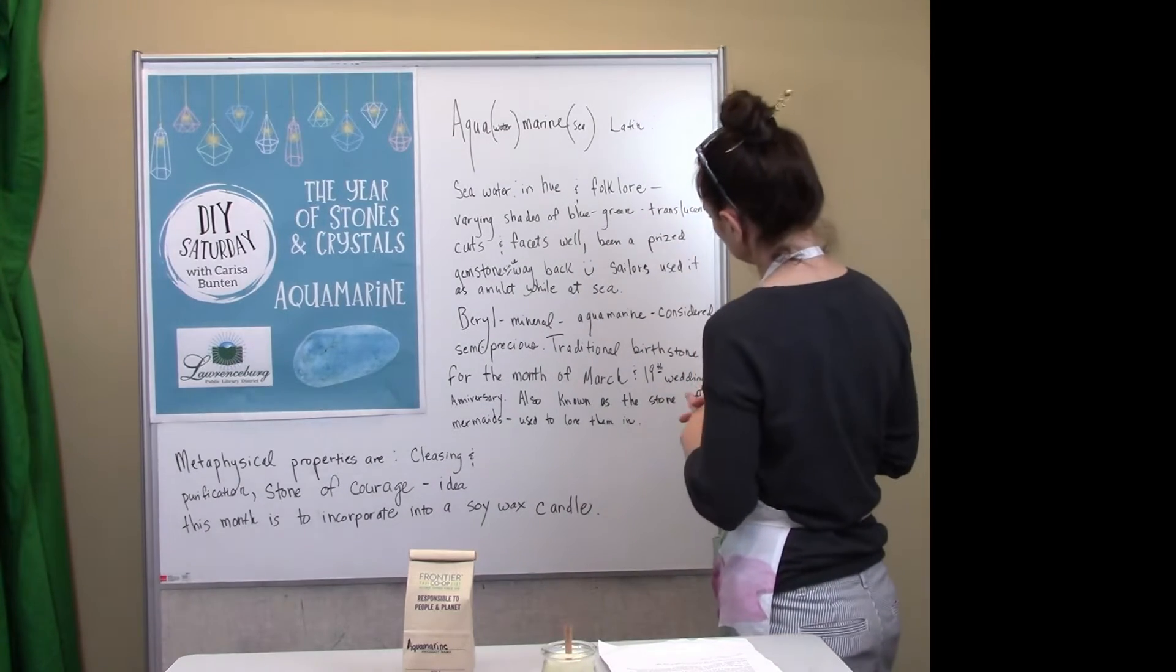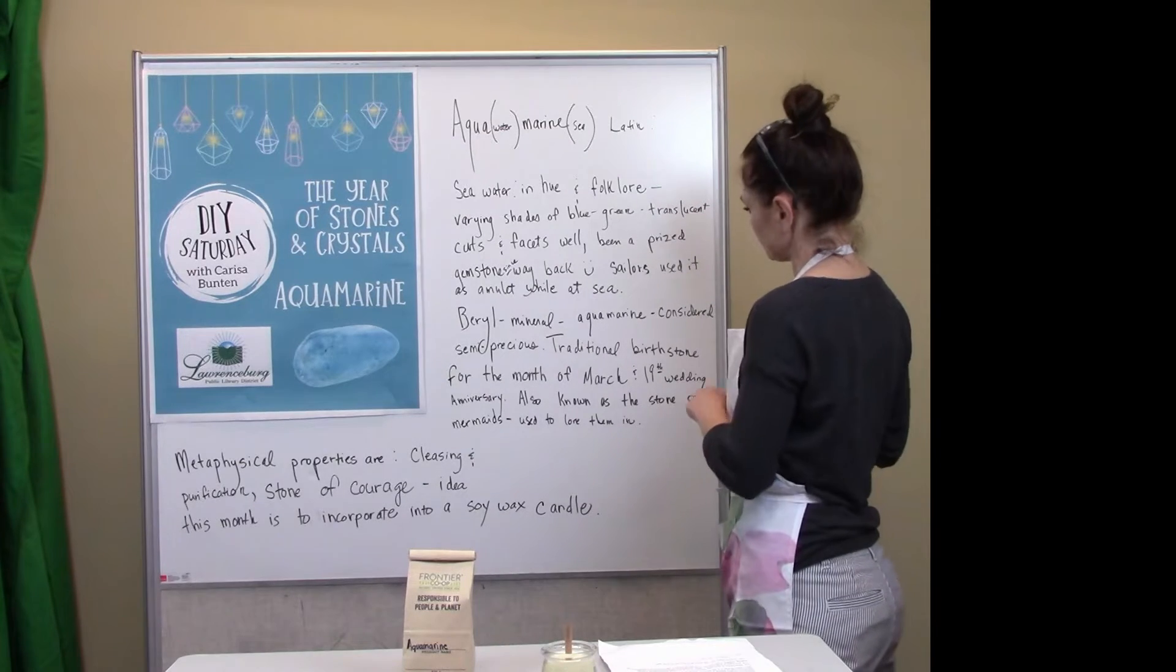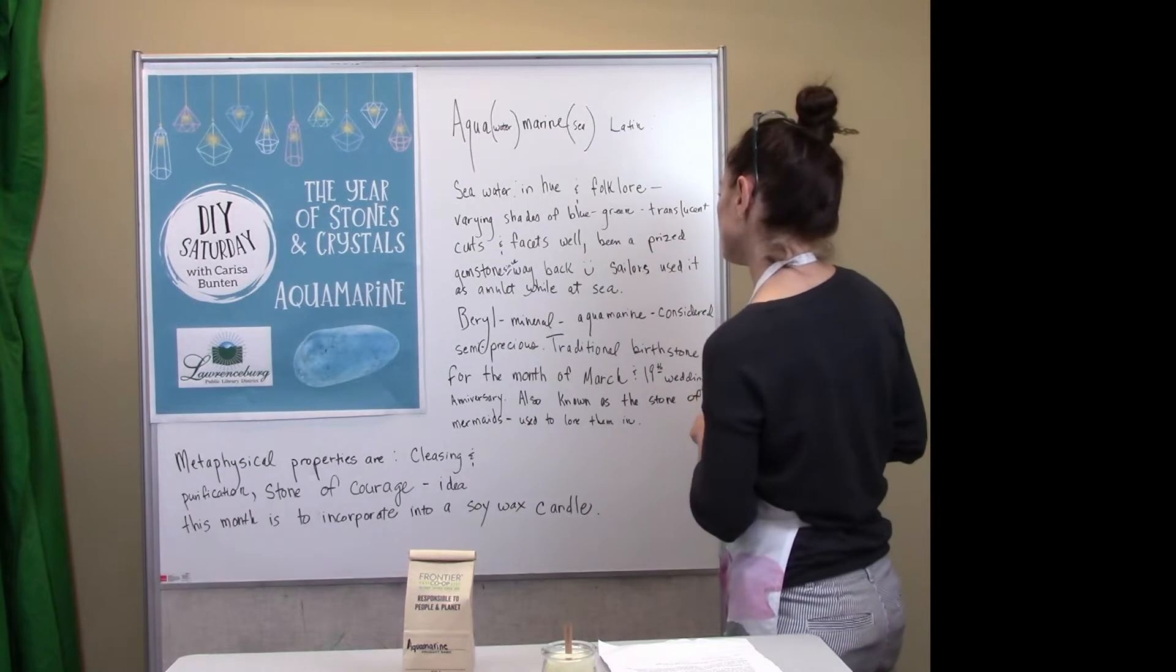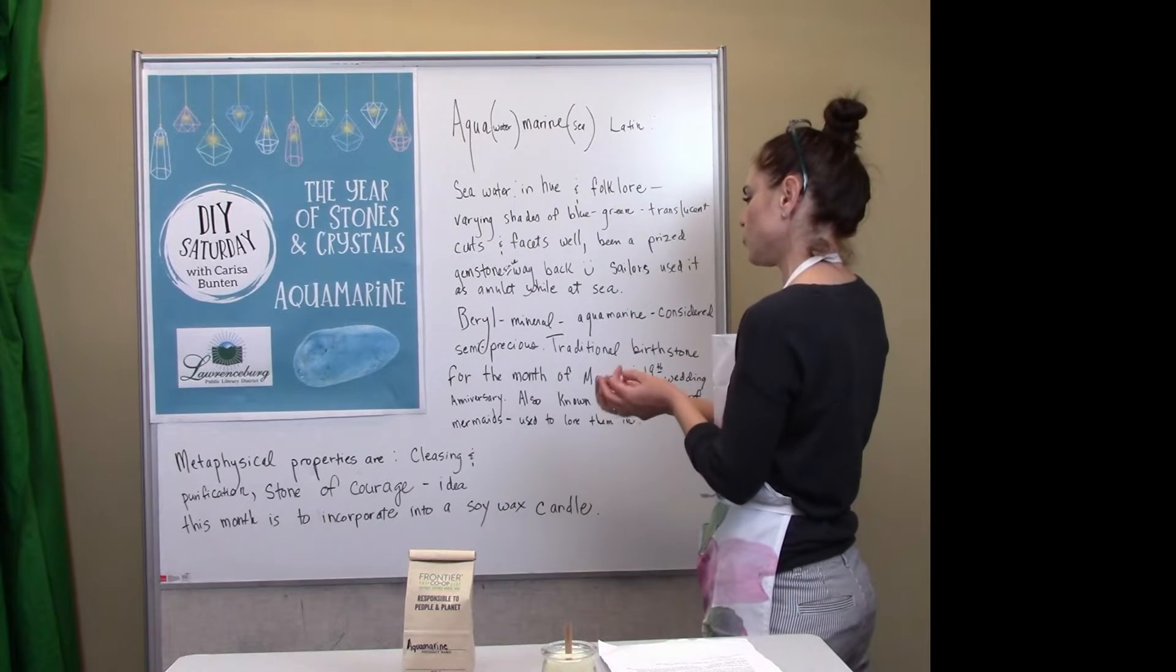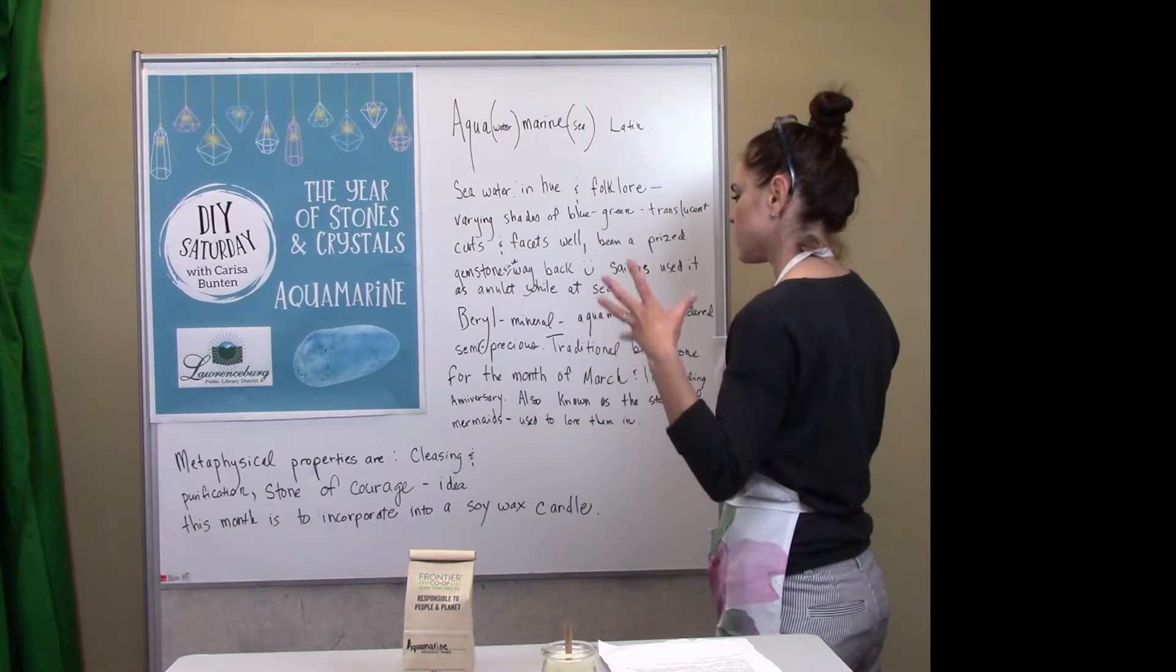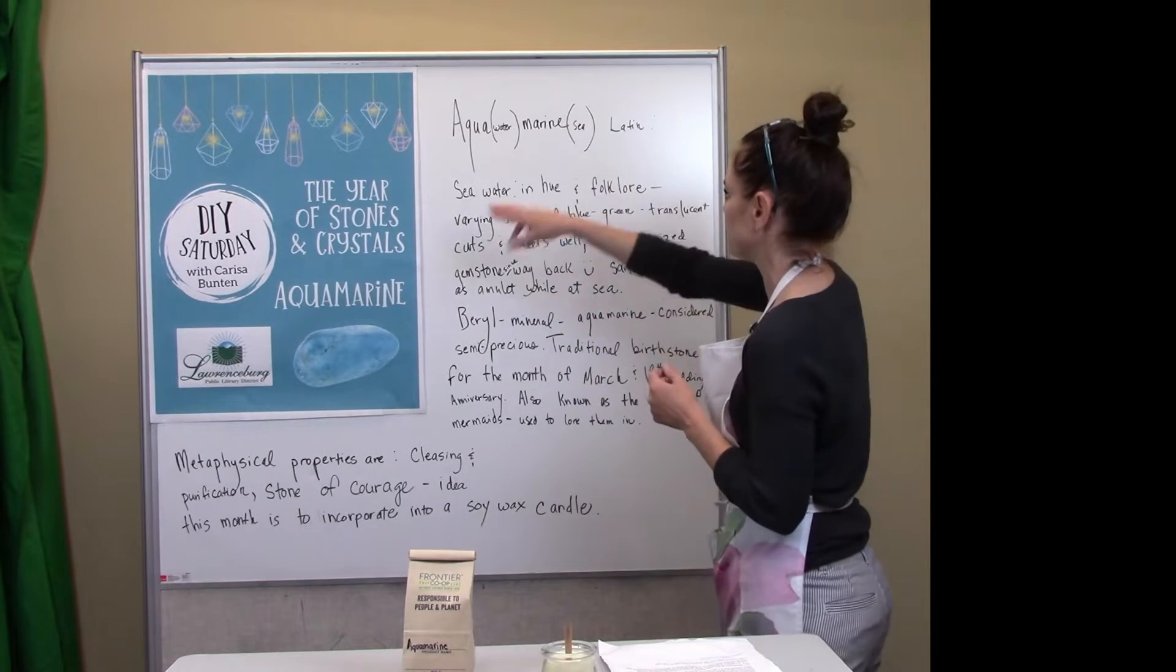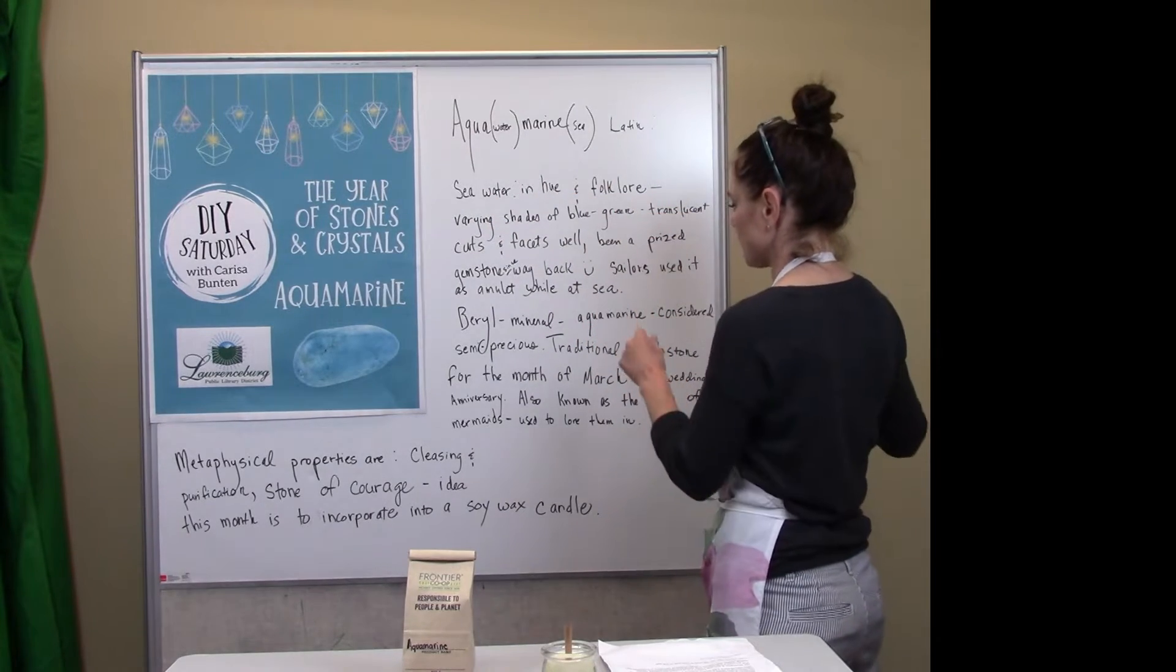So when you go back into old traditional wedding anniversary gifts, the 19th year was you were supposed to present either an aquamarine stone or crystal piece of jewelry, or a piece of cut or faceted glass that was the seawater hue to represent the aquamarine.